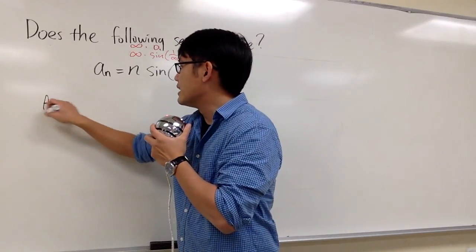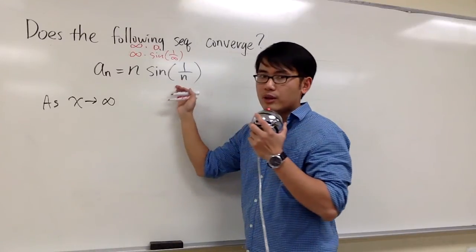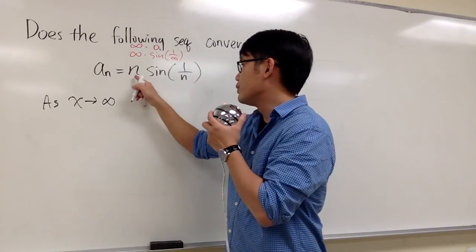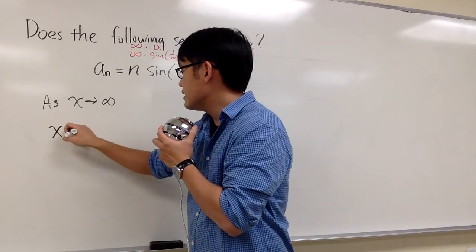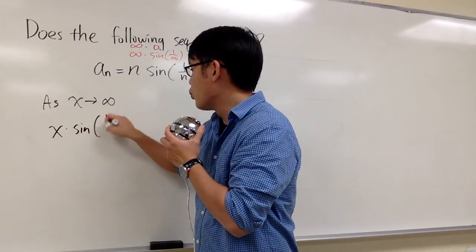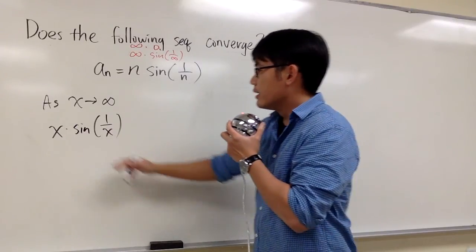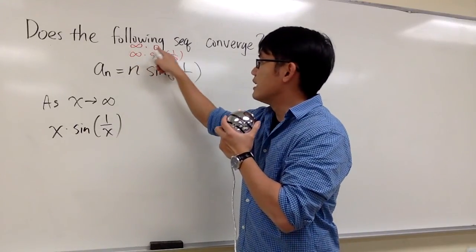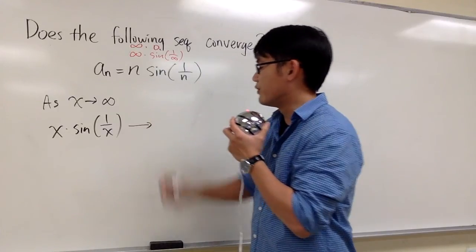I will write this down as x goes to infinity, and I will put down a corresponding function. All I need to do is change the n to x. I will look at x times sine of 1 over x. This will give us the infinity times 0 situation, and usually we can do this to fix that.